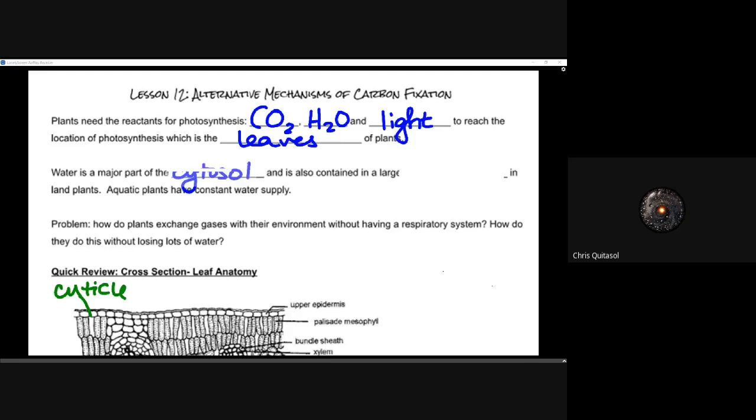Water is a major part of the cytosol and is also contained in the vacuole of the cell. That vacuole being very specialized in plants, being larger, and they hold that water in those vacuoles. Aquatic plants have the luxury of a constant water supply, depending on where that specific aquatic plant lives. It could be in saltwater or freshwater, but regardless, they have a constant supply of water. A problem can arise, however: what happens when plants try to exchange gases with their environments without having a respiratory system? How do they do this without losing tons of water?